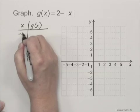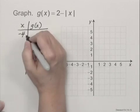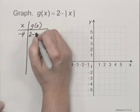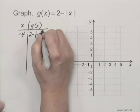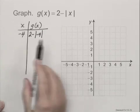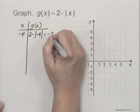We'll start with x as -4. This gives us 2 - |-4|, which is 2 - 4 or -2.